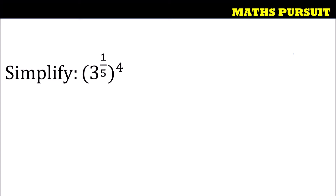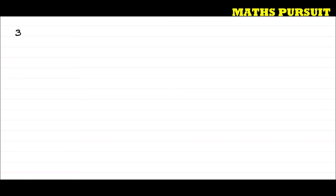Let us see how we can simplify the given expression. The expression is 3 to the power 1 upon 5, to the power 4, and the question is asking us to simplify it.